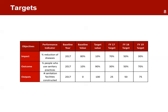Targets are the expected value the indicator should reach by a specific date. Some projects can break down the targets by year to report on the progress made. For example, a three-year project may have three targets, one for each year of the project.